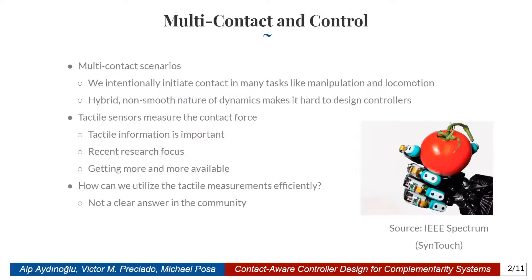In this work, we explore the question: how can we design controllers that are efficient in multi-contact scenarios? Multi-contact scenarios are frequent in robotics tasks such as dexterous manipulation or legged locomotion. The hybrid non-smooth nature of dynamics in multi-contact scenarios makes it hard to design controllers for them.